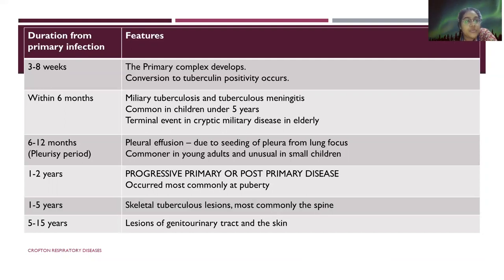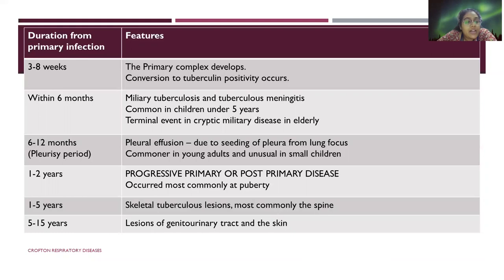From one to five years from primary infection, there is a likely chance to develop skeletal tuberculosis lesions, most commonly in the spine. From five to fifteen years, there are chances for lesions of the genitourinary tract and skin.